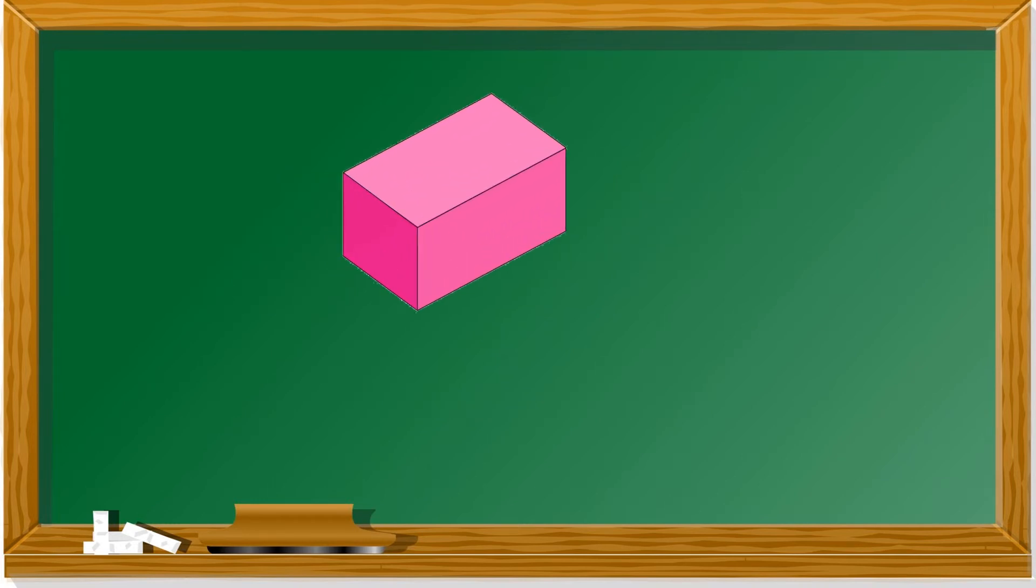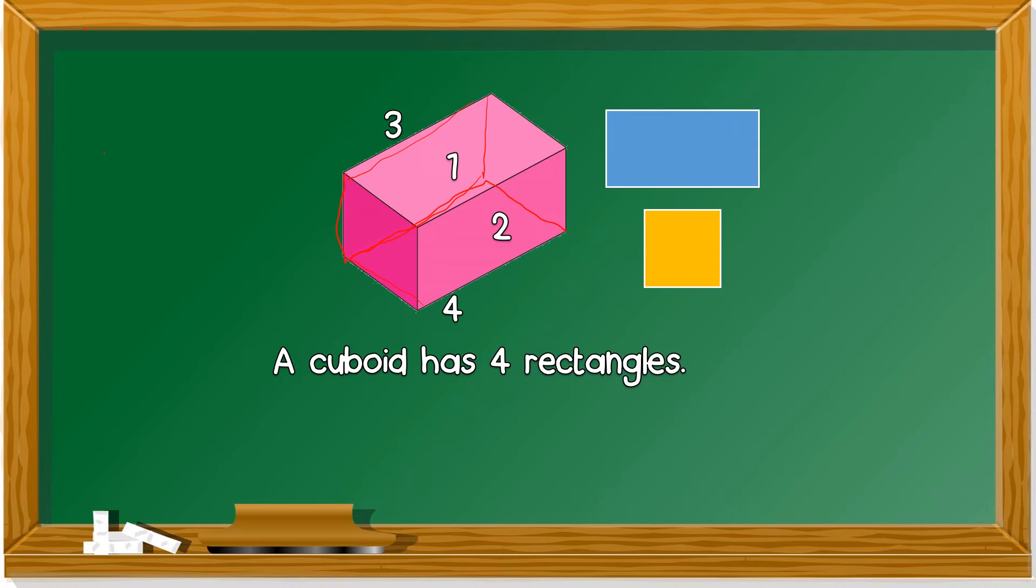Next shape, a cuboid. What basic shape can you see from this cuboid? Yes, there's rectangle and also square. Let's count. We start with the rectangle. 1, 2, 3. Where's the 3? It's here. 4 at the bottom. So this cuboid has 4 rectangles.